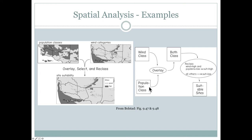So then we take the wind class and the population class and overlay those. And then we get the two classes combined. So we can see where the wind speed is high and the population density is low.